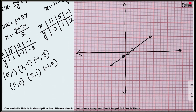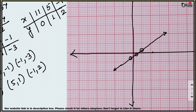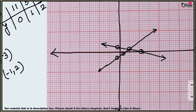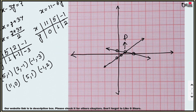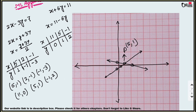For the second line: plot (11, 0), then (5, 1) again, then (−1, 2) — x equals minus 1, y equals 2. Join to form the second line. The intersecting point is P, which is (5, 1). So from the graph, x equals 5 and y equals 1 is your solution.